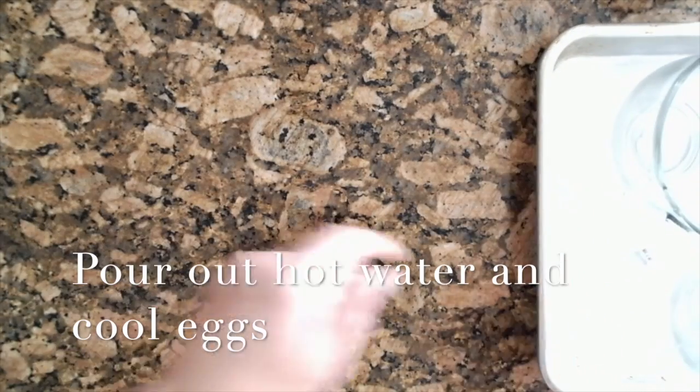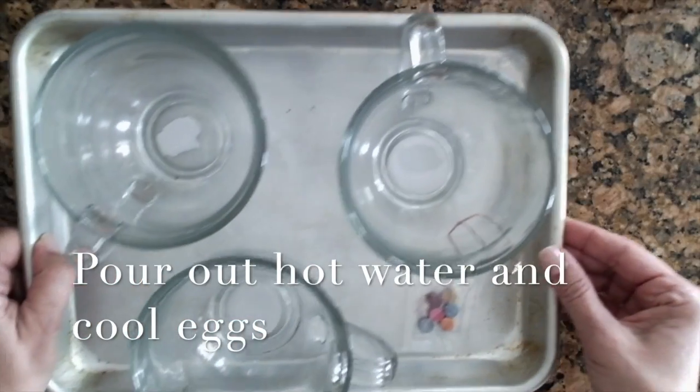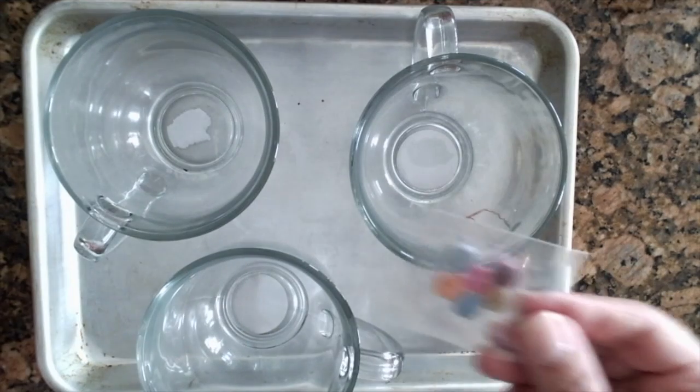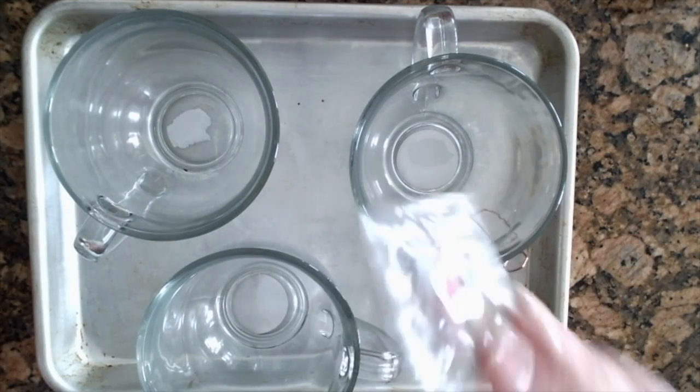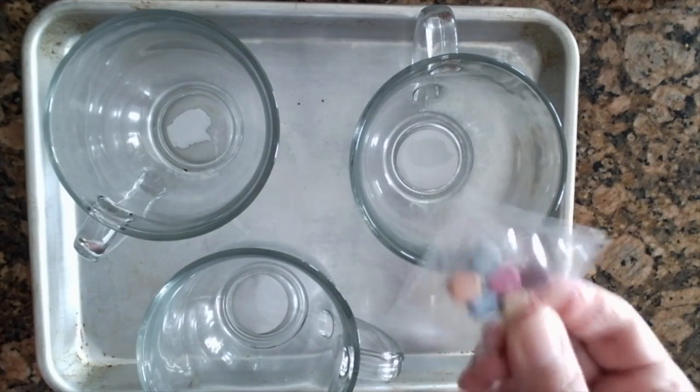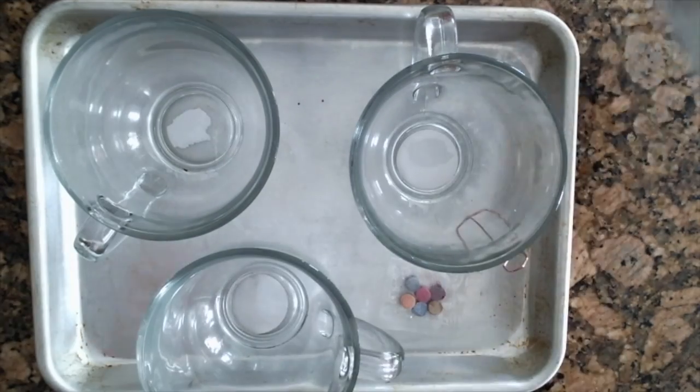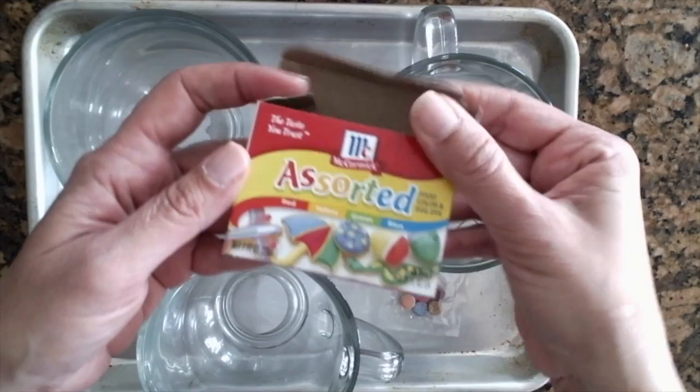A couple ways of doing this: you can get one of those little Easter egg kits that have color pellets—that's cool—or if you don't want to go out to the store, you probably already have some regular old food coloring.